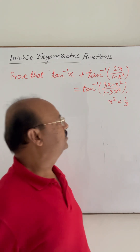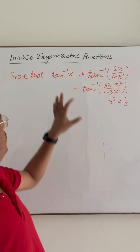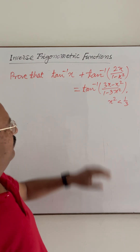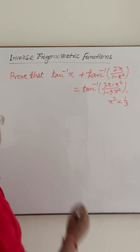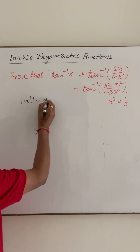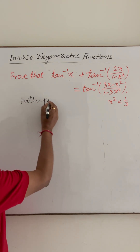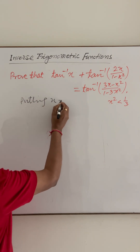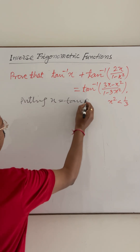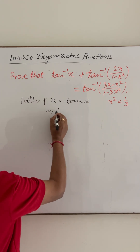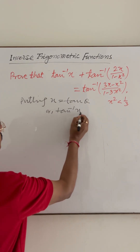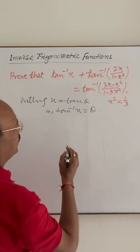We can prove this very easily by putting x equal to tan theta, or equivalently writing tan inverse of x equal to theta.